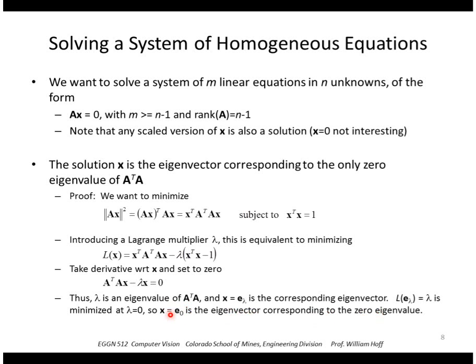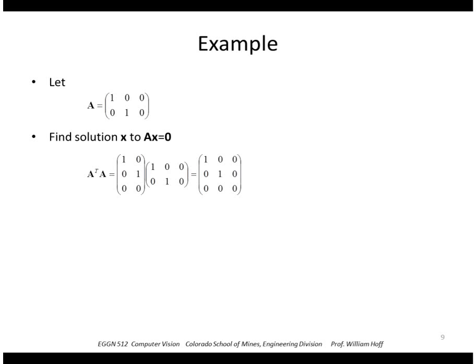Just an illustrative example: here is a matrix A. Let's say we want to find the solution x to the equation Ax equals 0. So x is going to be a three-element vector, a three-by-one vector. Forming the product A transpose A, we get this product here. So we want to find the eigenvalues and eigenvectors of that.